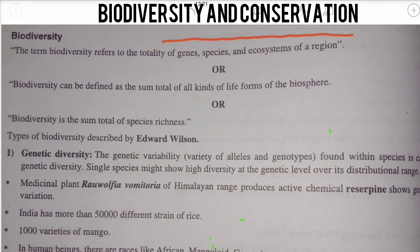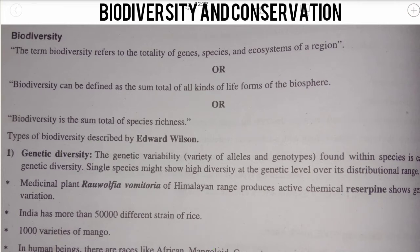First of all, you should understand the term biodiversity — what is biodiversity? If an alien visited our planet Earth, he would be really amazed by looking at the enormous diversity of life. When we find a fight between two dogs, when we listen to a bird singing, a peacock dancing — we get really amazed and astonished. This is very great diversity — biodiversity.